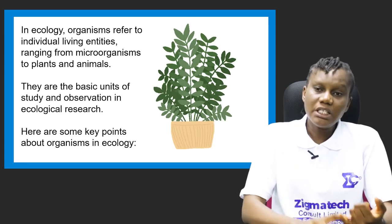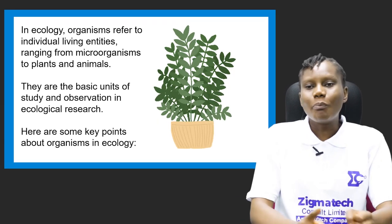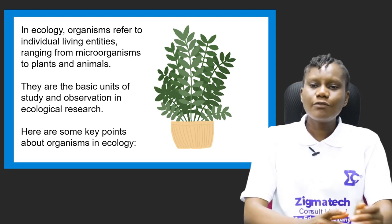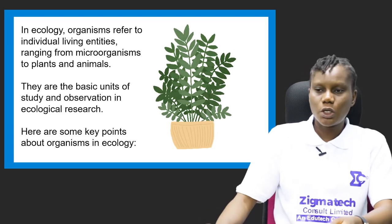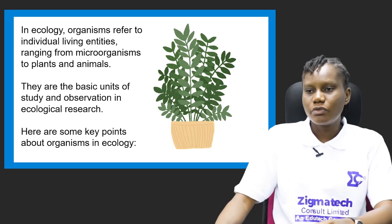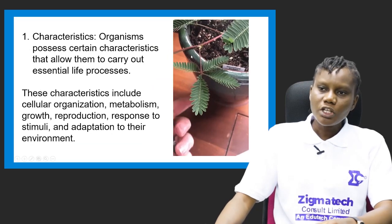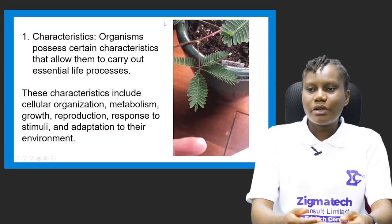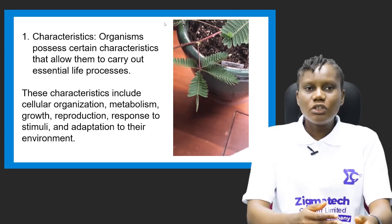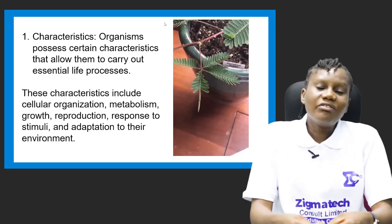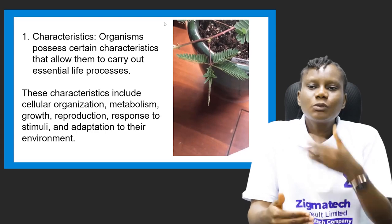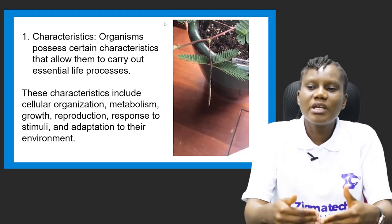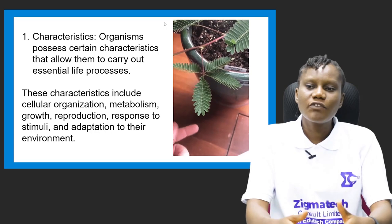We have some key points about organisms in ecology. Number one is characteristics. These organisms are living entities, so they have life in them. Organisms possess certain characteristics that allow them to carry out essential life processes, including cellular organization, metabolism, growth, reproduction, and response to stimuli.